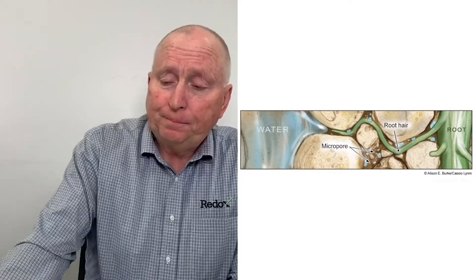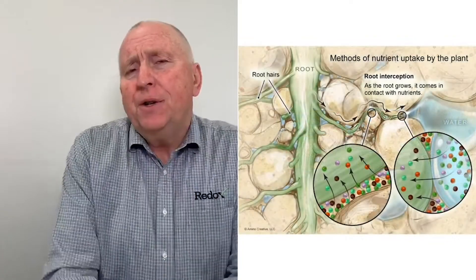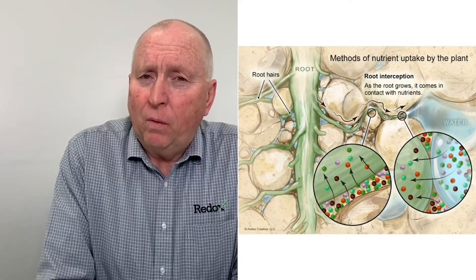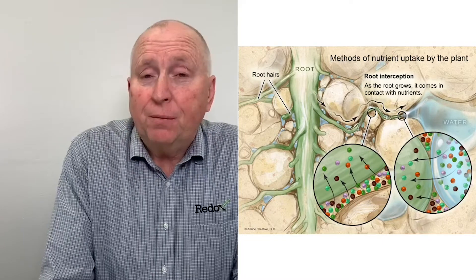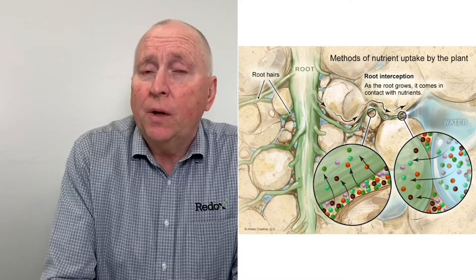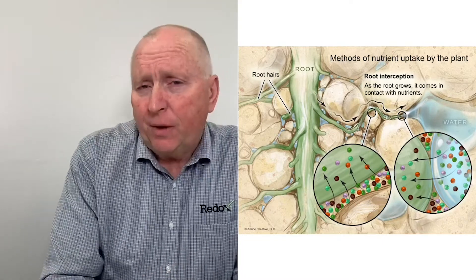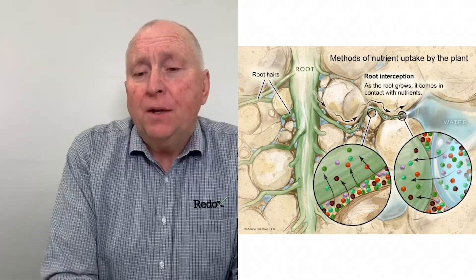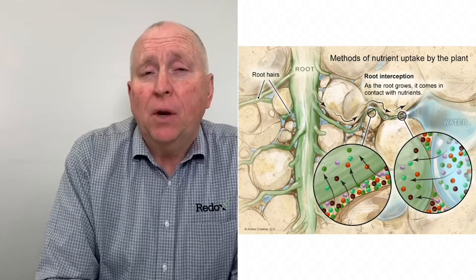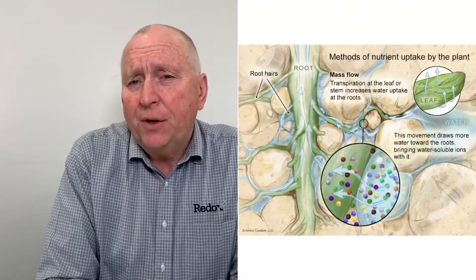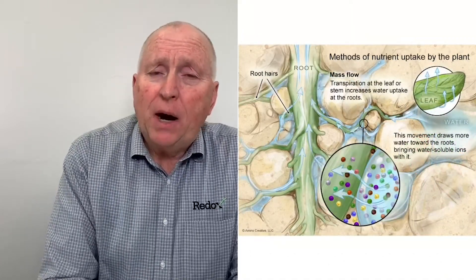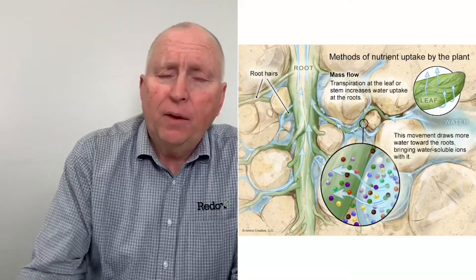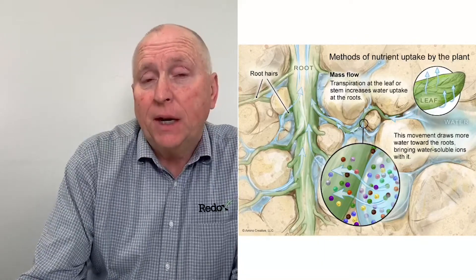Just a reminder that there are three key mechanisms for nutrient uptake. The first is root interception, wherein the root grows to the nutrient — that's one of the means whereby calcium is taken up. The second is mass flow, whereby transpiration, as the plant transpires, pulls up water and nutrients from the soil — that's another means how calcium is taken up in the plant.